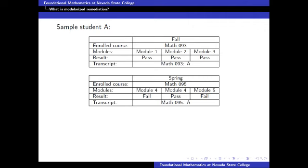This student will still receive an A for the class even though he failed two modules that semester. The reason is that he has completed math 95, which ends at module four, and therefore the student will receive an A for math 95.